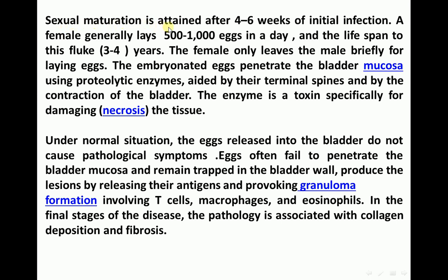Sexual maturation is attained after four to six weeks of initial infection. A female generally lays about 500 to 1,000 eggs per day, and the lifespan of this fluke is about three to four years. The female only leaves the male briefly for laying eggs. The embryonated eggs penetrate the bladder mucosa using proteolytic enzymes, aided by their terminal spines and by the contraction of the bladder itself. The enzyme acts as a toxin specifically for damaging the tissue.